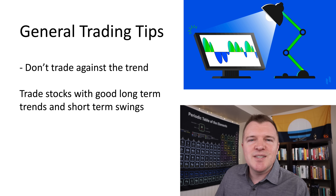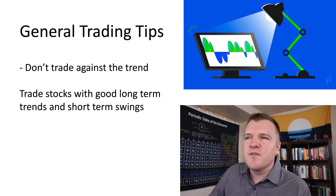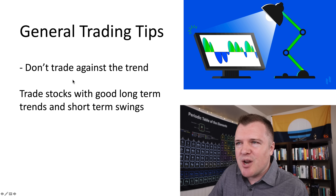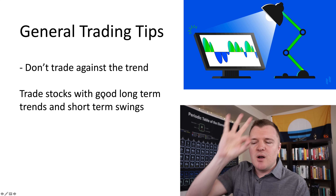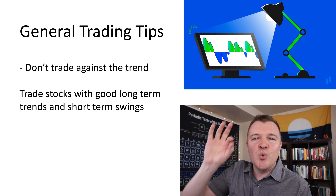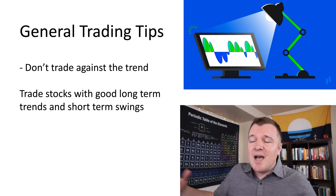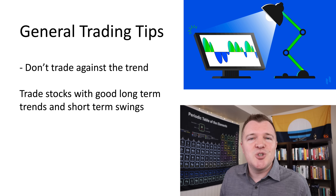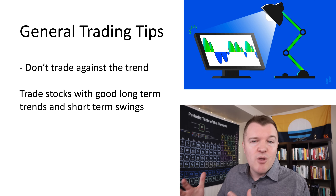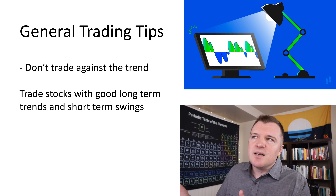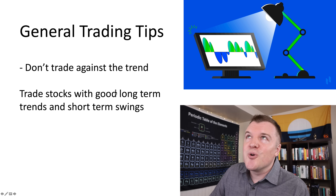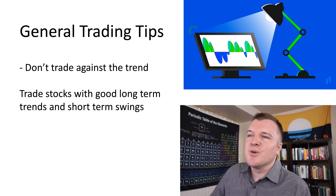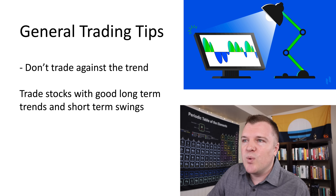Before you go out there and use stochastics, let me give you some general trading tips. First: don't trade against the general trend. If a stock has strong uptrends or strong downtrends, don't trade against it — trade with the long-term trends. All good long-term trends eventually end, and you need to know when that happens and a stock reverses or enters a period of consolidation. But in general, if the long-term is overbought, don't try to short that stock even in the short term, because the long-term will eventually win out.